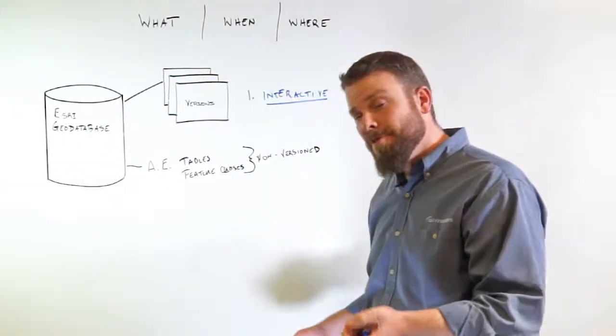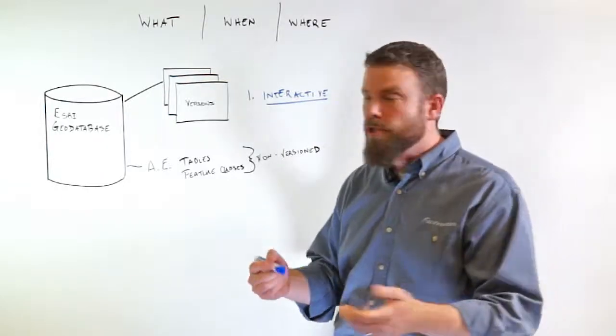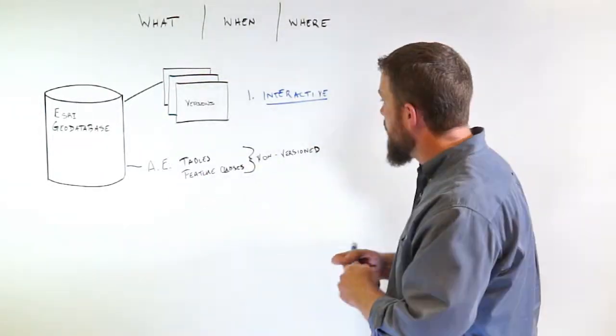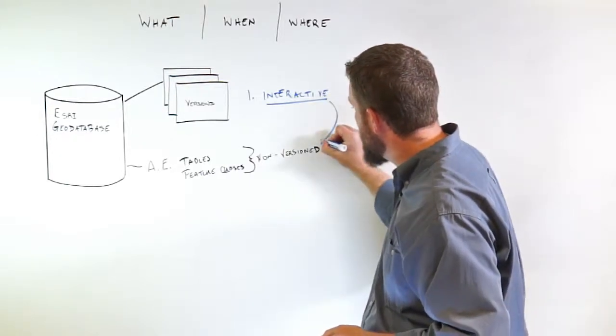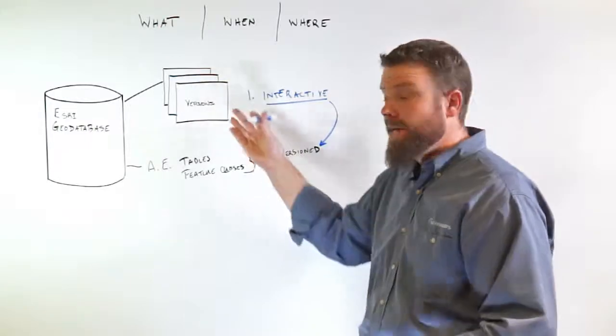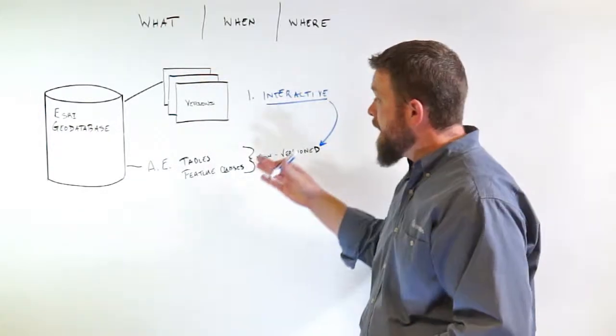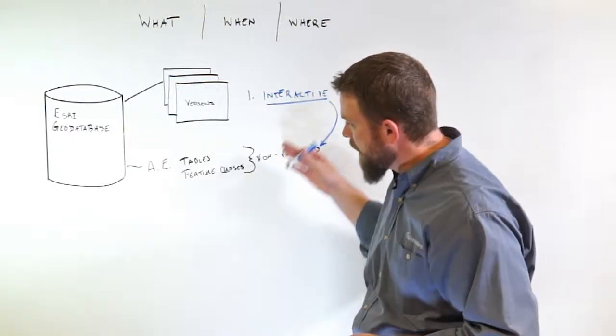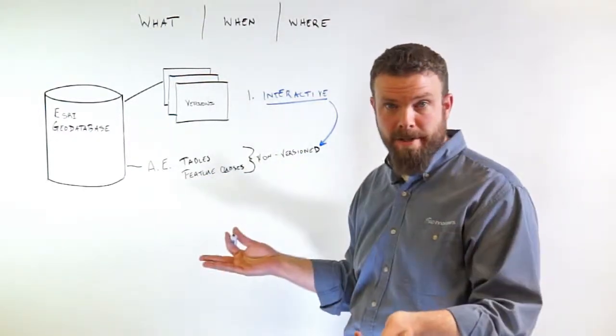That allows us to do a few more really cool things within the geodatabase. First and foremost, in the interactive mode, if you want to save your edits off from the interactive report into the geodatabase, you can do that with the click of the button. This allows you then to go ahead and post the version interactively. The version's gone, of course, but we've saved off the edits, the adds, the updates to delete directly into the geodatabase, so we can view them at a later point in time.